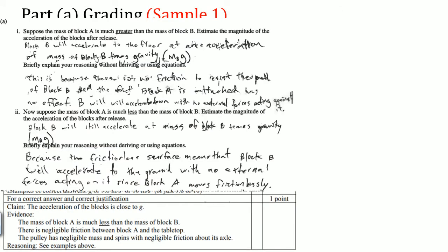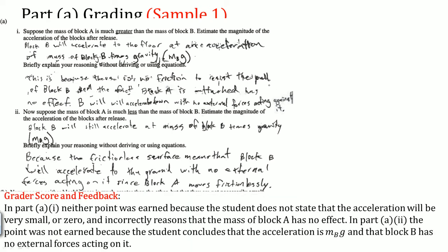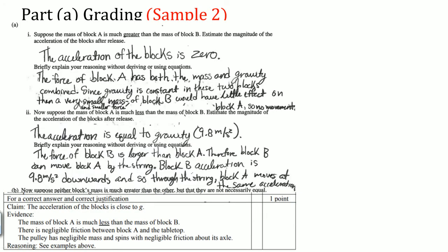Let's see what one student wrote. For part A they wrote: block A will accelerate to the floor at the acceleration of the mass of block B times gravity. For part B they wrote: it will accelerate at the mass of block B times gravity because it is frictionless. No points were earned because the response did not say the acceleration is super small, zero, or has no effect. Part B also earns no points because the conclusion is inconsistent.